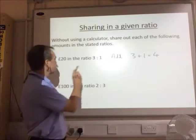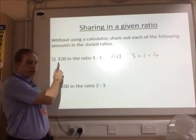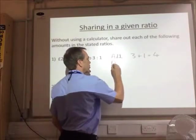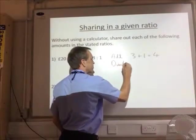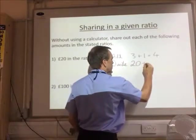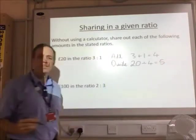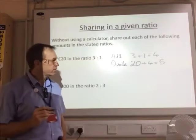We're then going to divide the total £20 by that total we've just worked out. So we're going to divide 20. So 20 divided by 4 is 5.